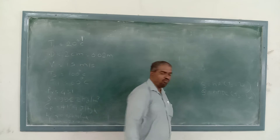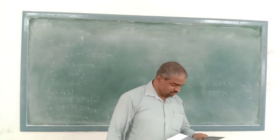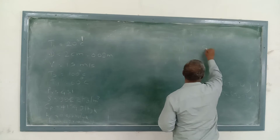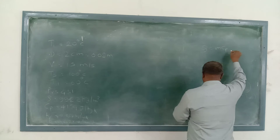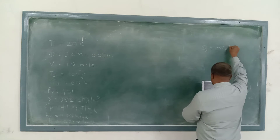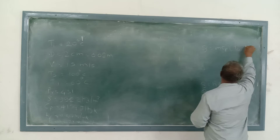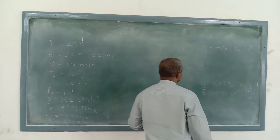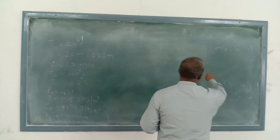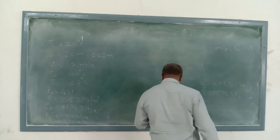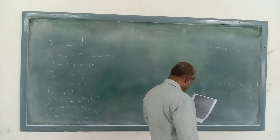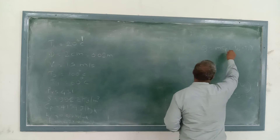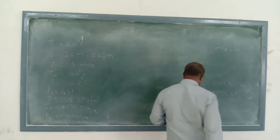Before that, we need the value of Q. Q is calculated using Q = m·CP·ΔT, where ΔT = To − Ti. To calculate Q, we need the values of mass flow rate m, CP, To, and Ti.